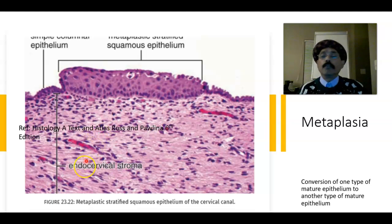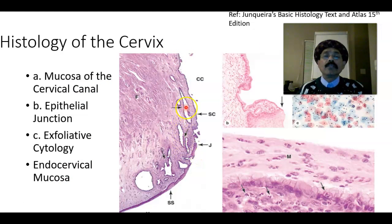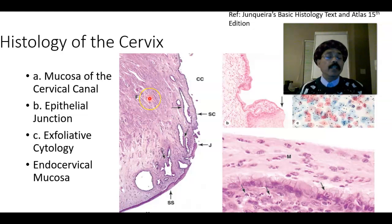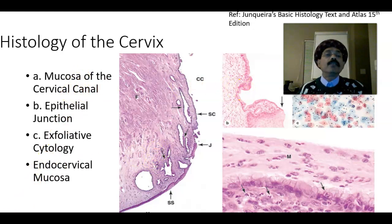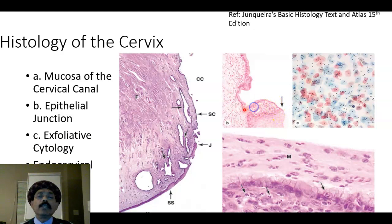The nerve supply is autonomic, not somatic, in the cervical region. The mucosa of the cervical canal is lined by columnar epithelium; the cervical glands are branched tubular glands, obliquely placed. The lamina propria for the glands is composed of fibrous tissue, collagen and elastic fiber with few muscle fibers. Cyst formation may occur in the glands. Here we can see the epithelial junction — stratified squamous epithelium on one side and columnar epithelium on the other; the columnar is single-layered while the squamous is multi-layered.